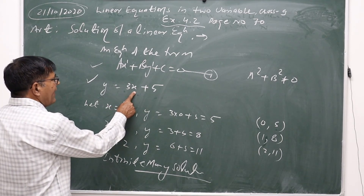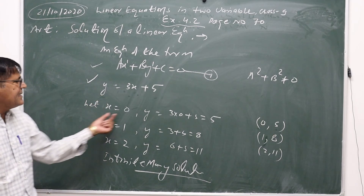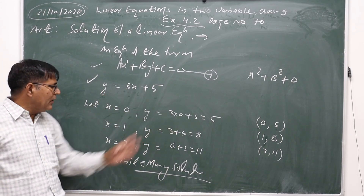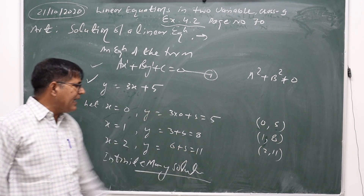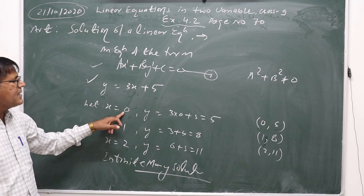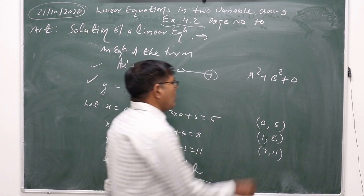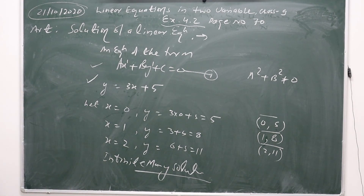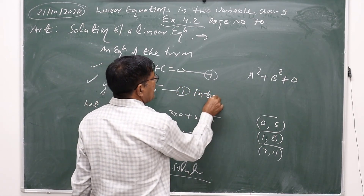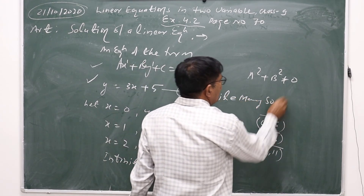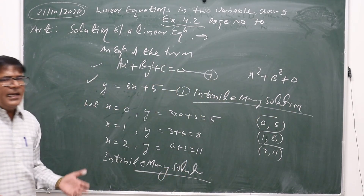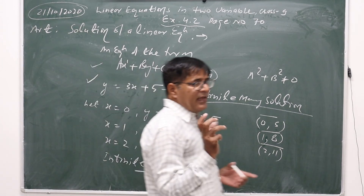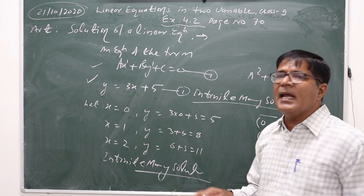The solution means that for different values of x, there will be different values of y. For example, when x equals 0, y equals 5; when x equals 1, y equals 8. For every different value of x there is a corresponding value of y. So when we have any given linear equation, it has infinitely many solutions. This is the universal law: any single linear equation has infinitely many solutions.